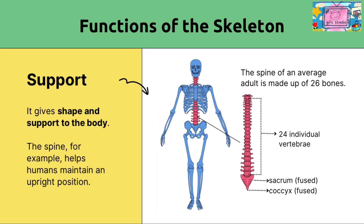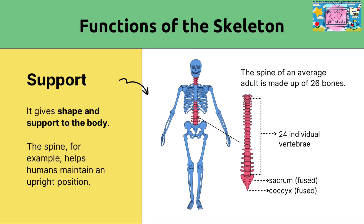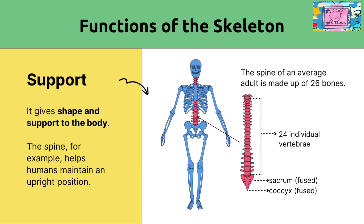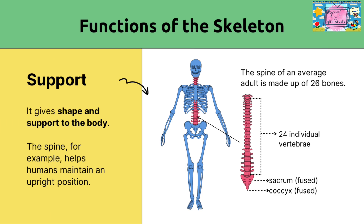Functions of the Skeleton — Support: the skeleton gives shape and support to the body. The spine, for example, helps humans maintain an upright position. The spine of an average adult is made up of 34 individual vertebrae, including the sacrum.